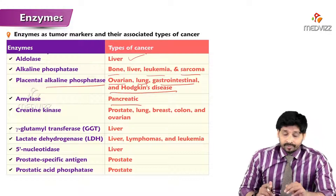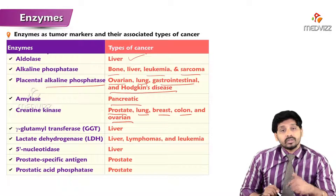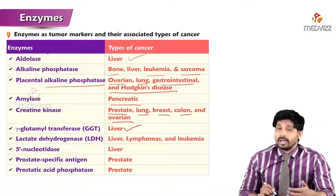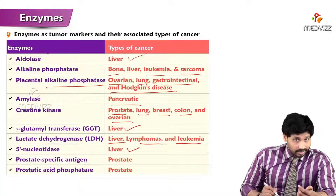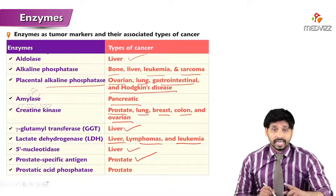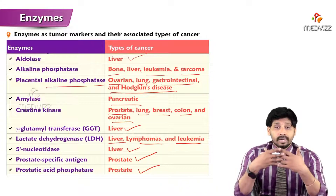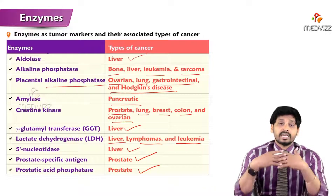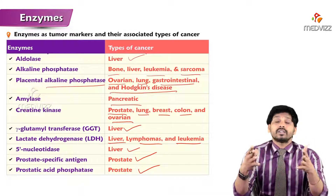Amylase is elevated in pancreatic cancer. Creatine kinase is elevated in prostate, lung, breast, colon, and ovarian cancers. Gamma-glutamyl transferase is elevated in liver cancers. Lactate dehydrogenase is elevated in liver, lymphomas, and leukemias. 5'-nucleotidase is elevated in liver cancer. Prostate-specific antigen and prostate acid phosphatase are both elevated in prostate cancer. All these — aldolase, alkaline phosphatase, placental alkaline phosphatase, amylase, creatine kinase, GGT, LDH, 5'-nucleotidase, PSA, and acid phosphatase — are tumor markers of different tissues or organs.